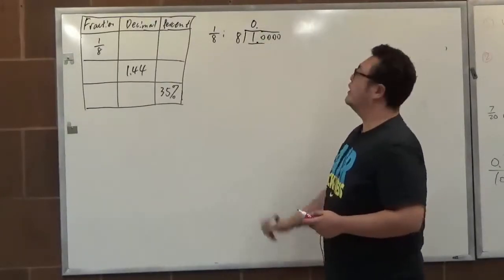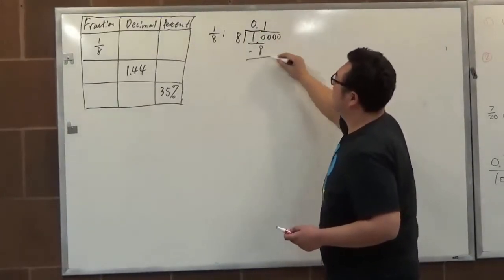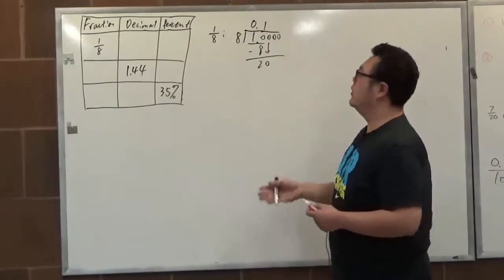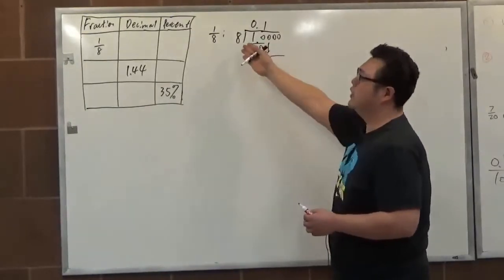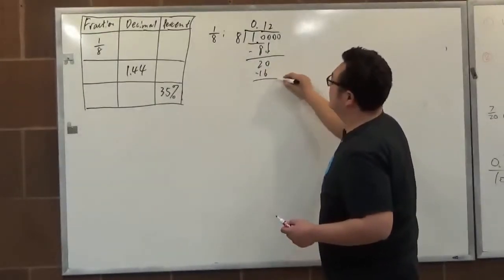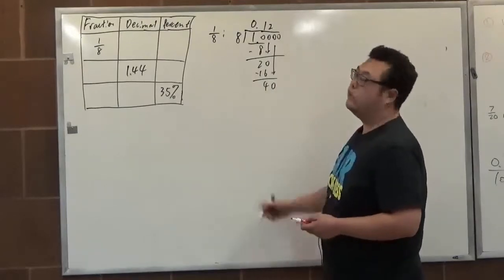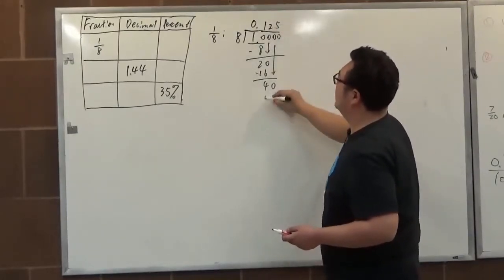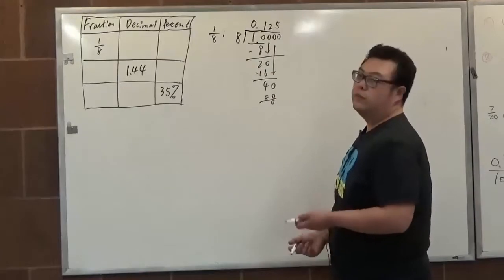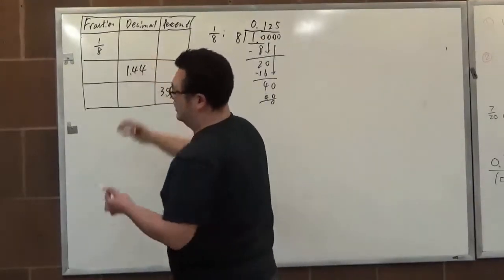Then 8 goes into 10, we have 1, take away that, we have 2 and carry down the 0. That completes one step and we keep repeating the same thing. 8 times 2 gives 16, and when we get 40, that's 5 times and it stops at 40. So the decimal form is finite — we get 0.125.